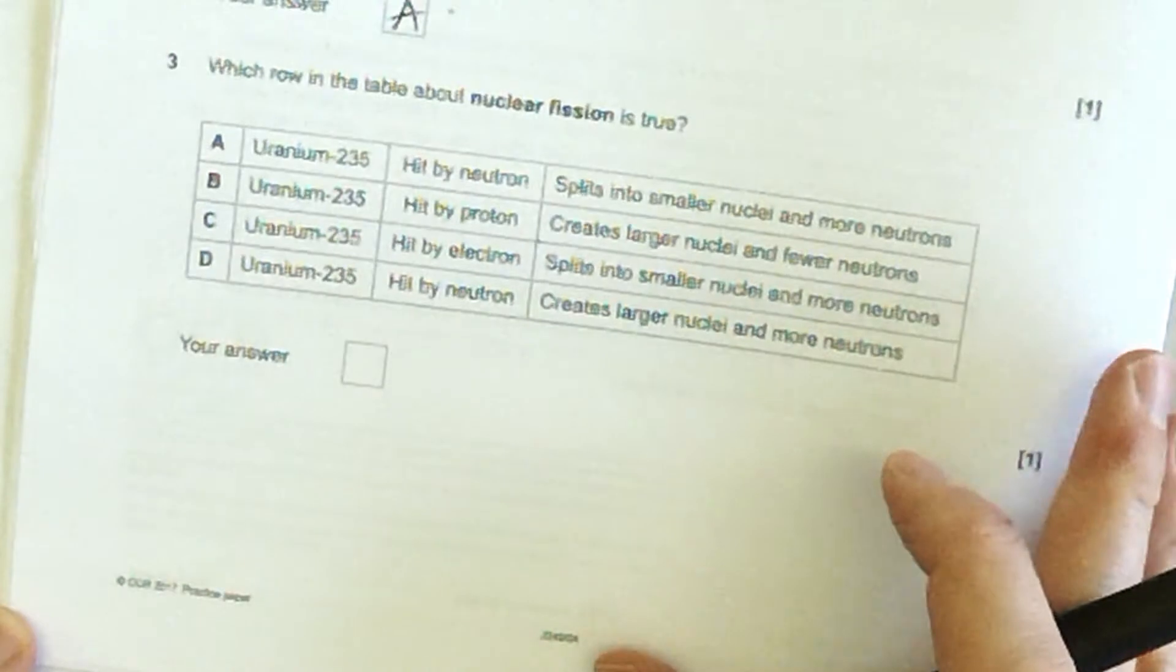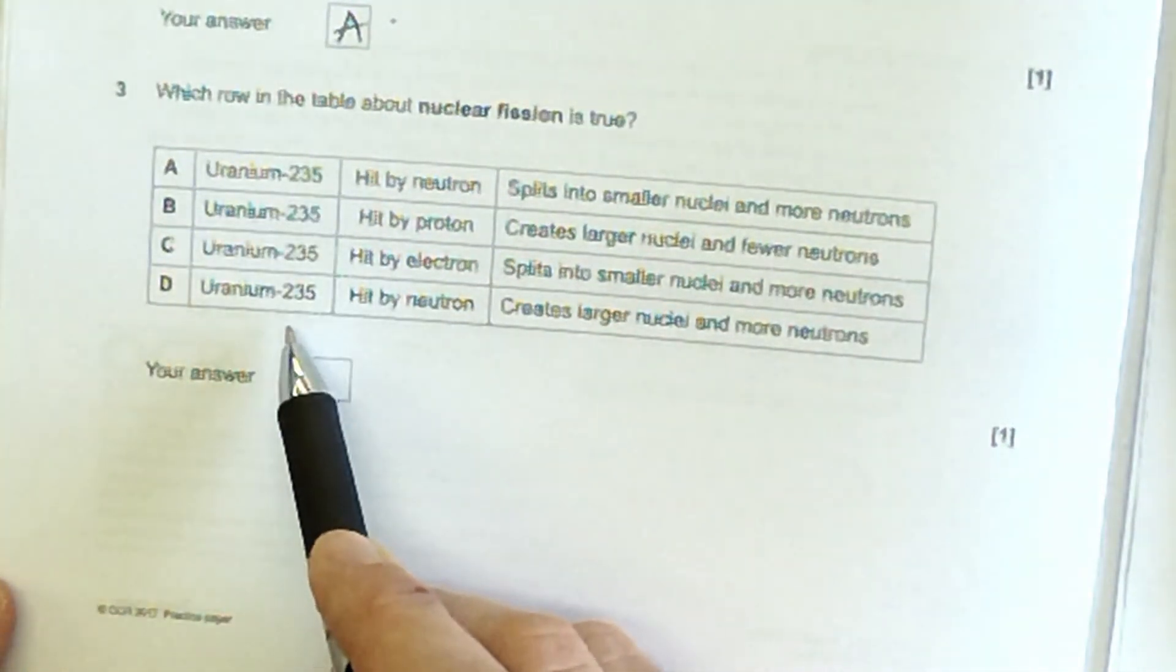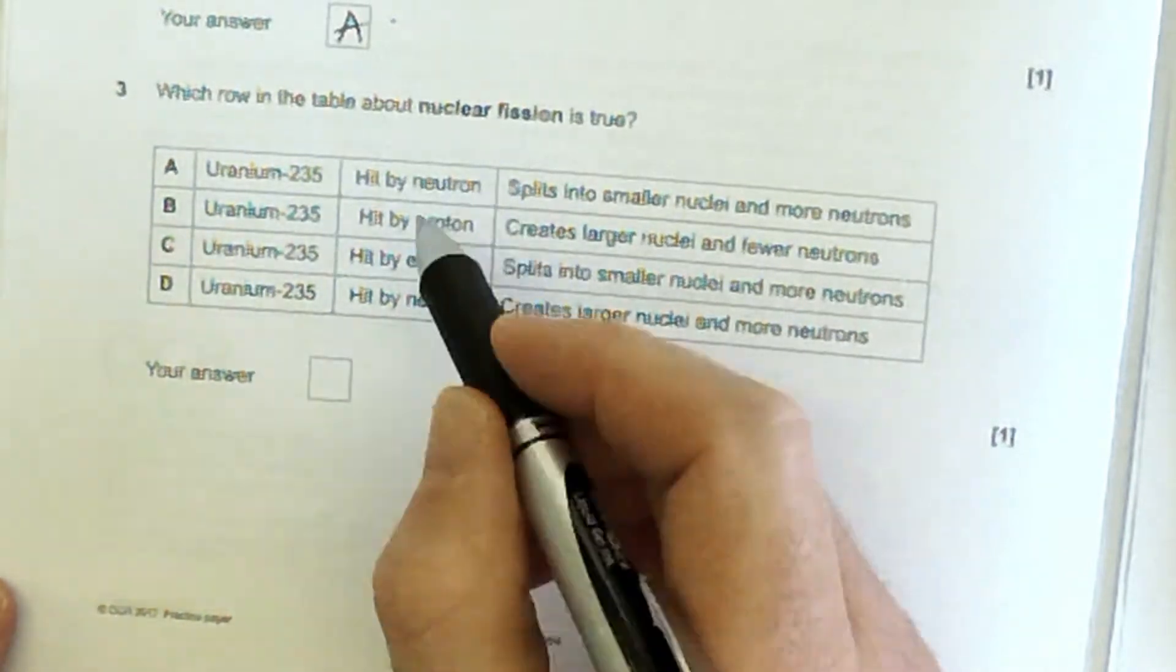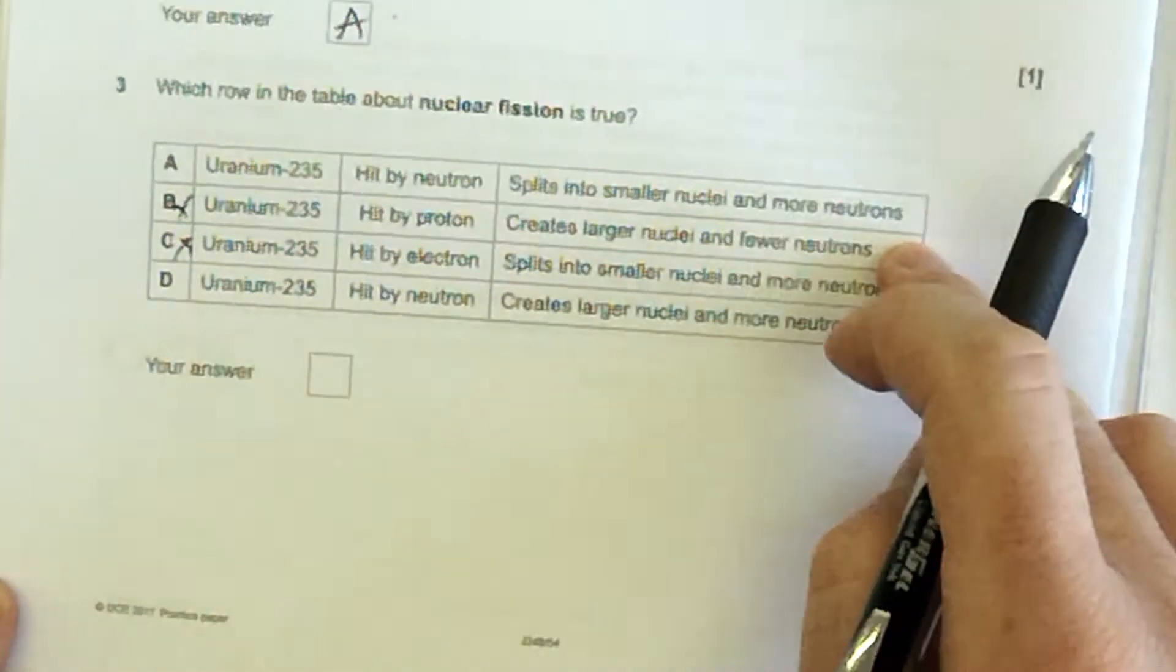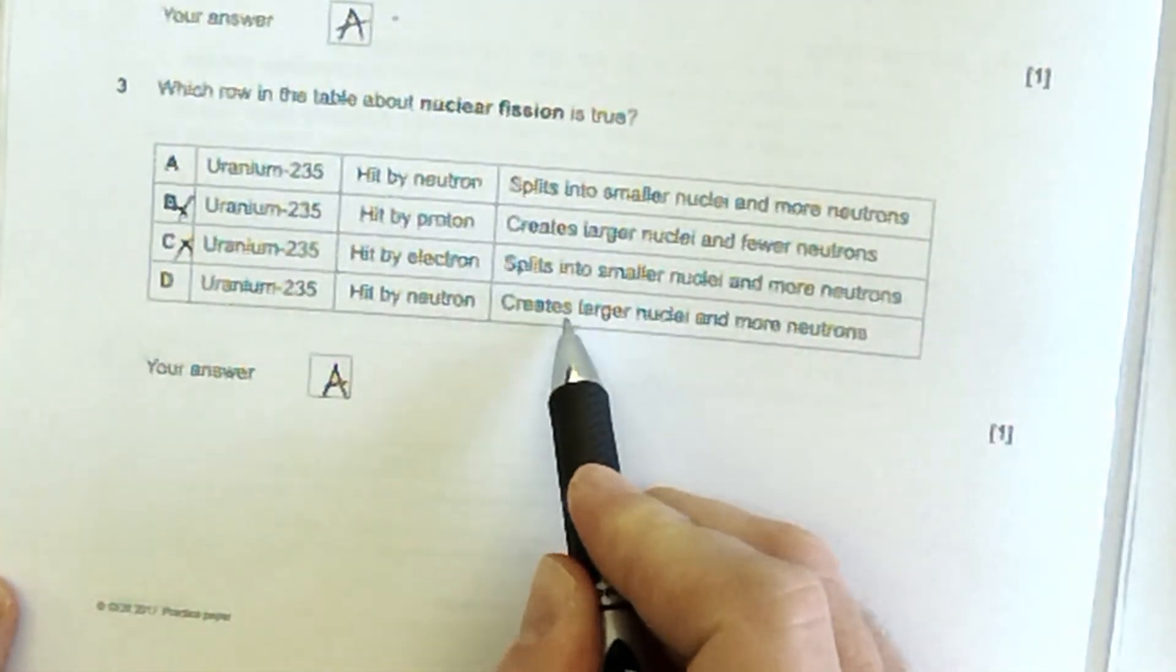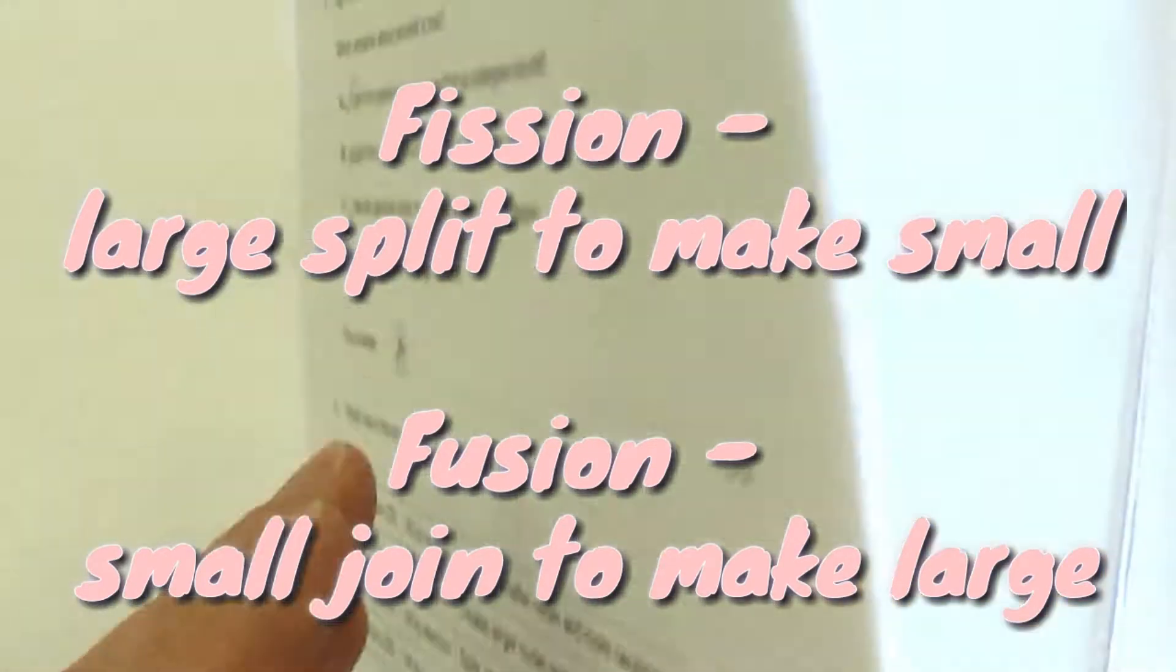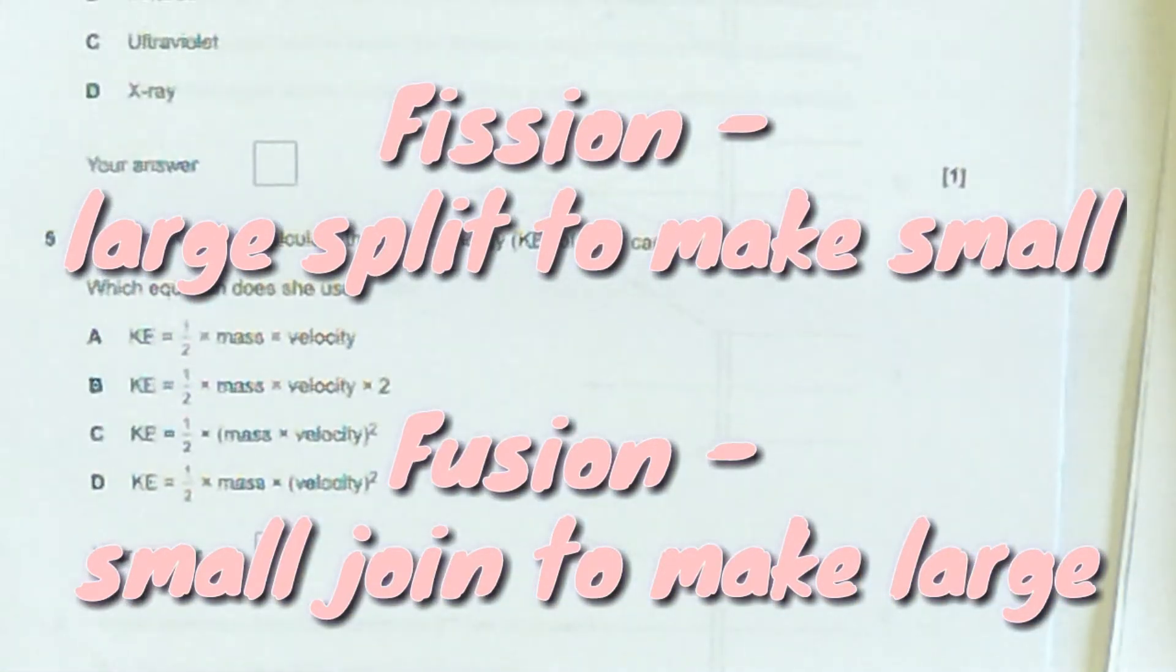Which row in the table about nuclear fission is true? Okay, fission is when a uranium, so they're all okay, is hit by a neutron, so it can't be B or C. It absorbs that neutron and then splits into smaller nuclei and gives out more neutrons, so it's not creating larger ones. Fission is large splitting into small, and fusion is small joining to make large.